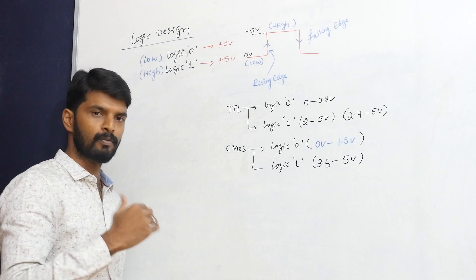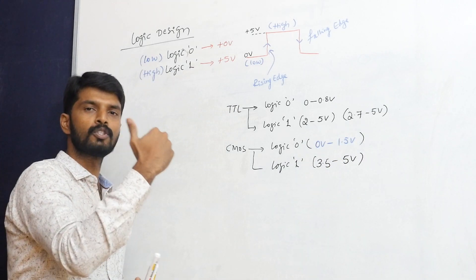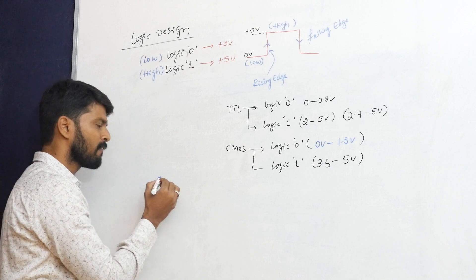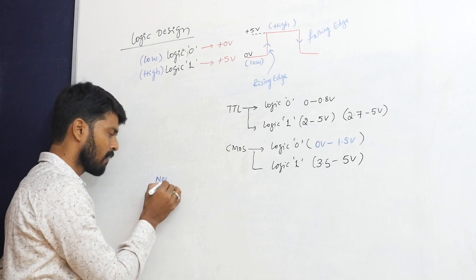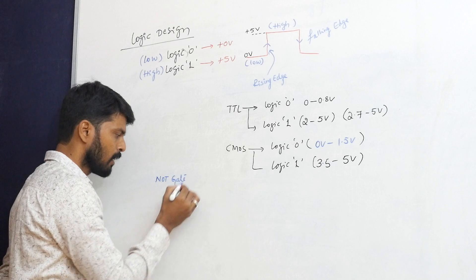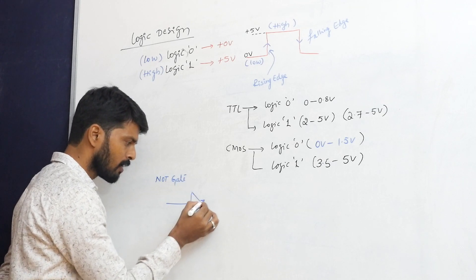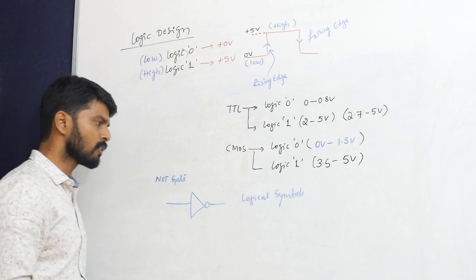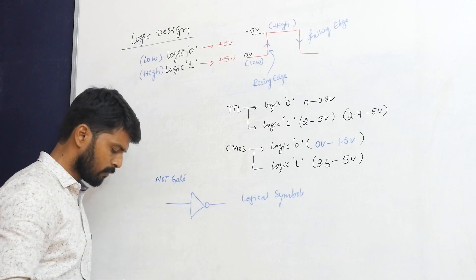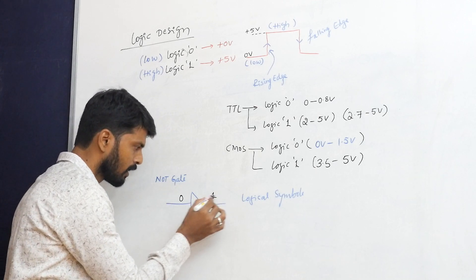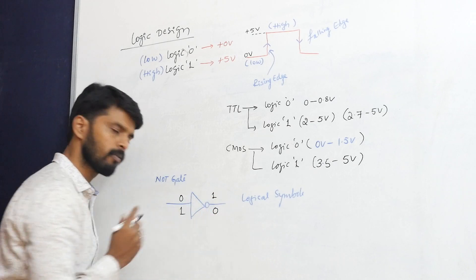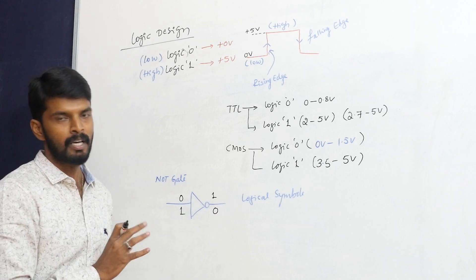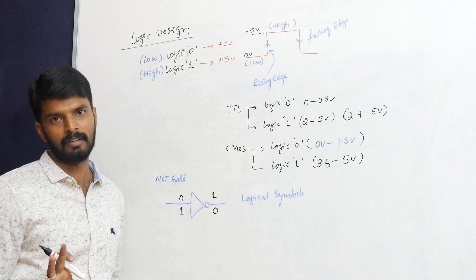In CMOS, logic zero represents 0 to 1.5 volts. The logic swings from zero to one or one to zero. Now, if I want to design a NOT gate as an example — this is the NOT gate logical symbol. If I provide zero at the input, I get one at the output.